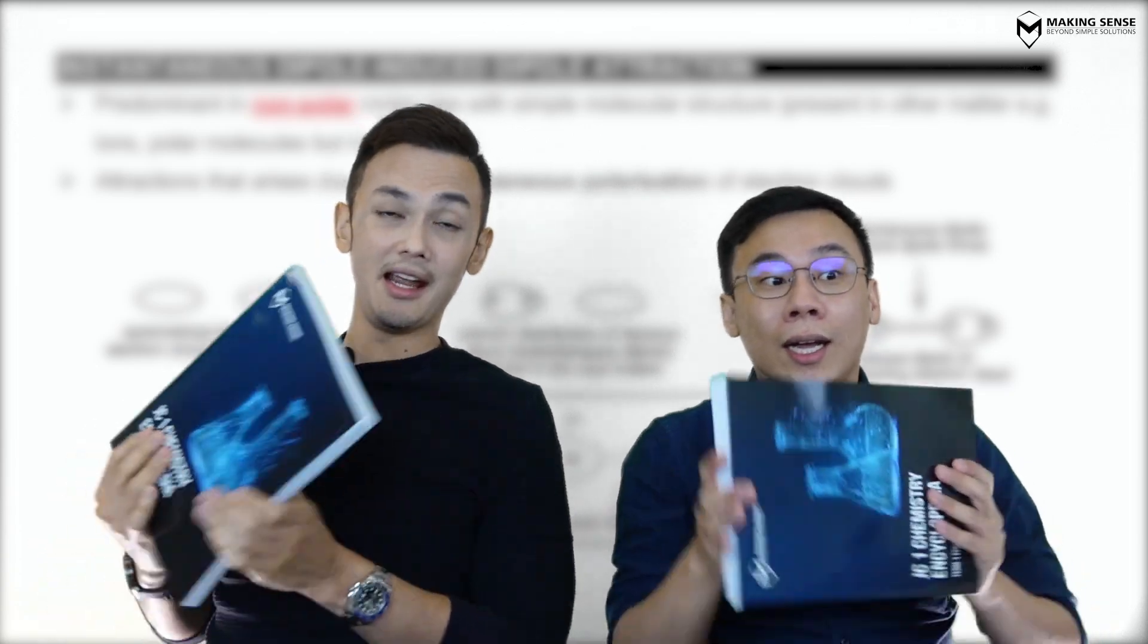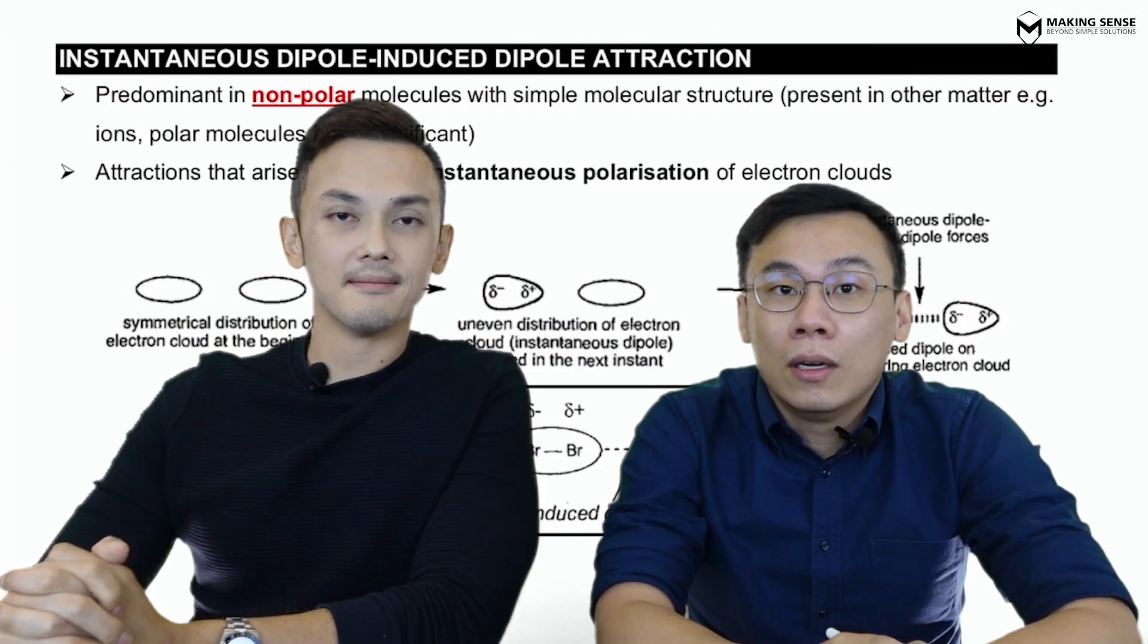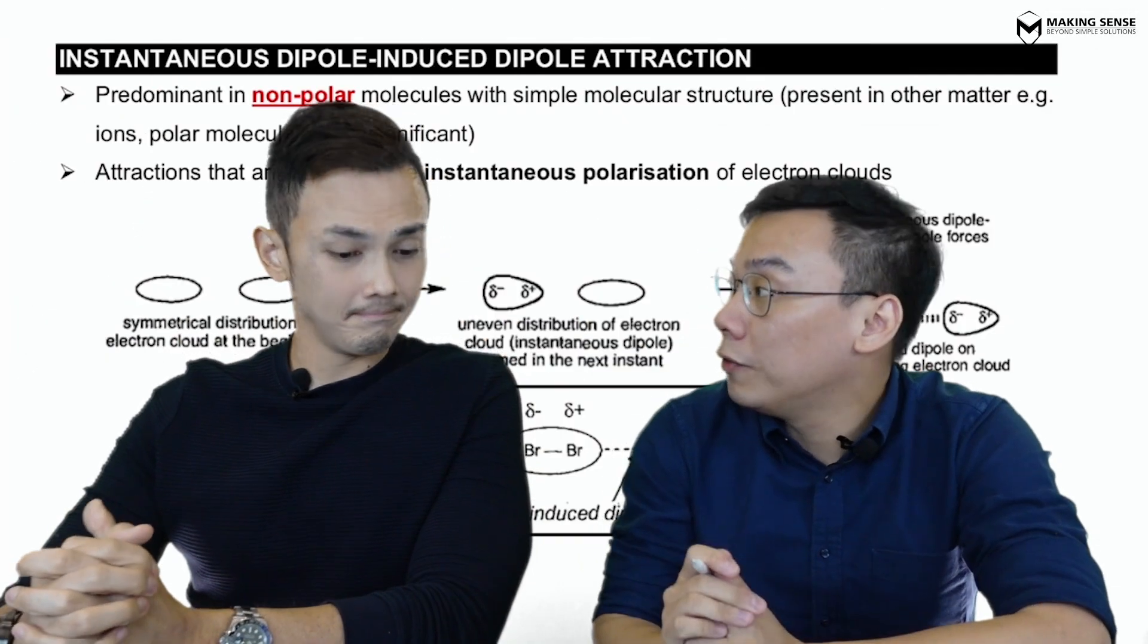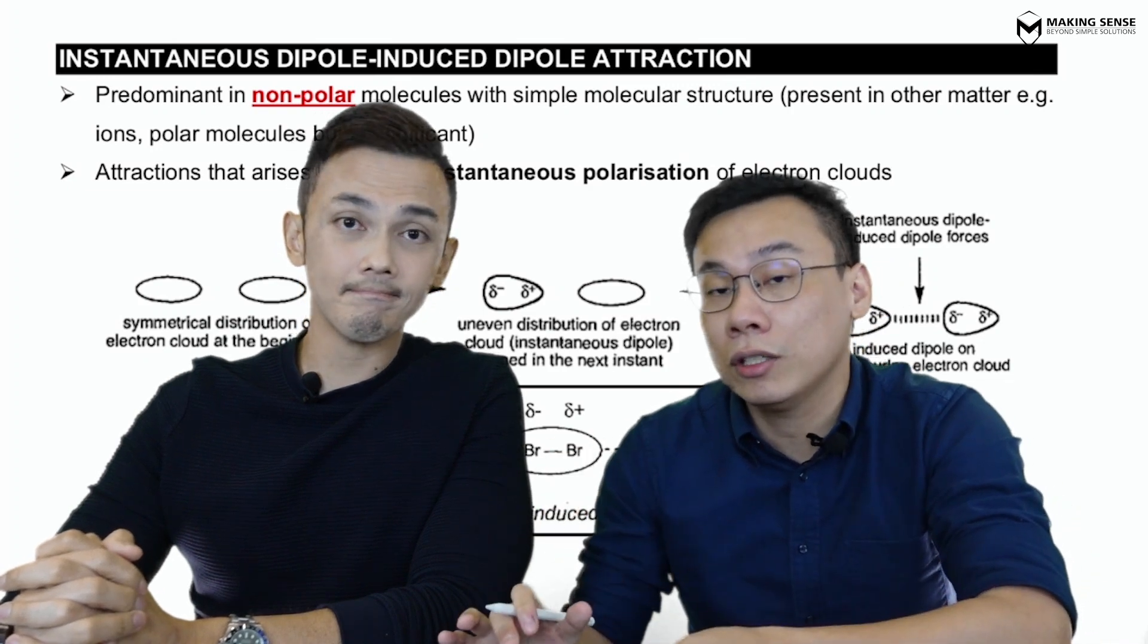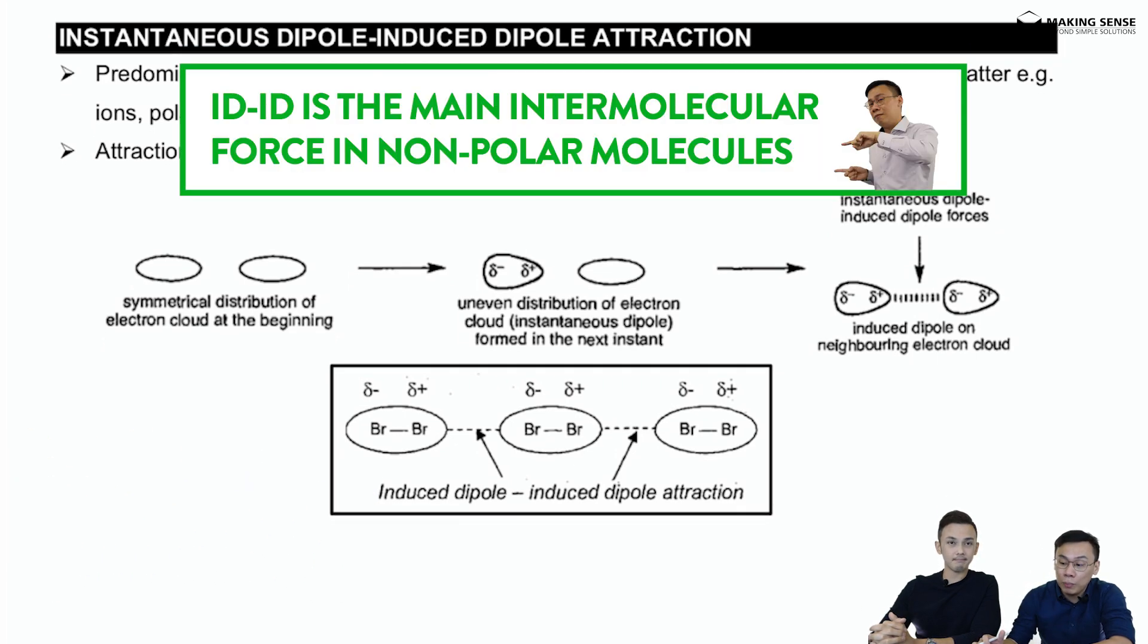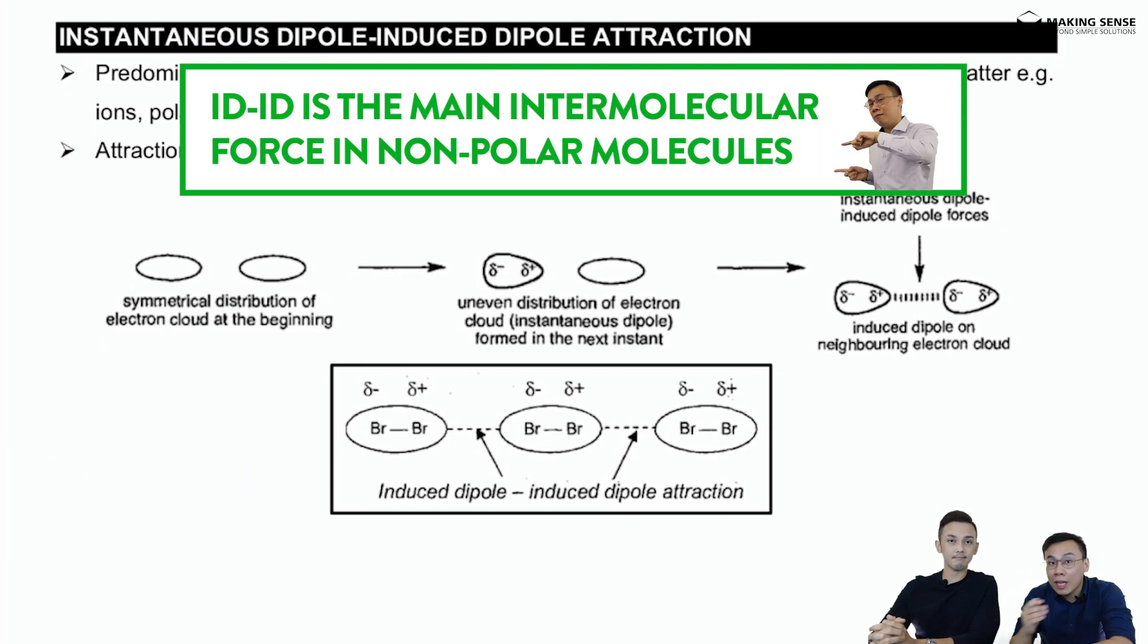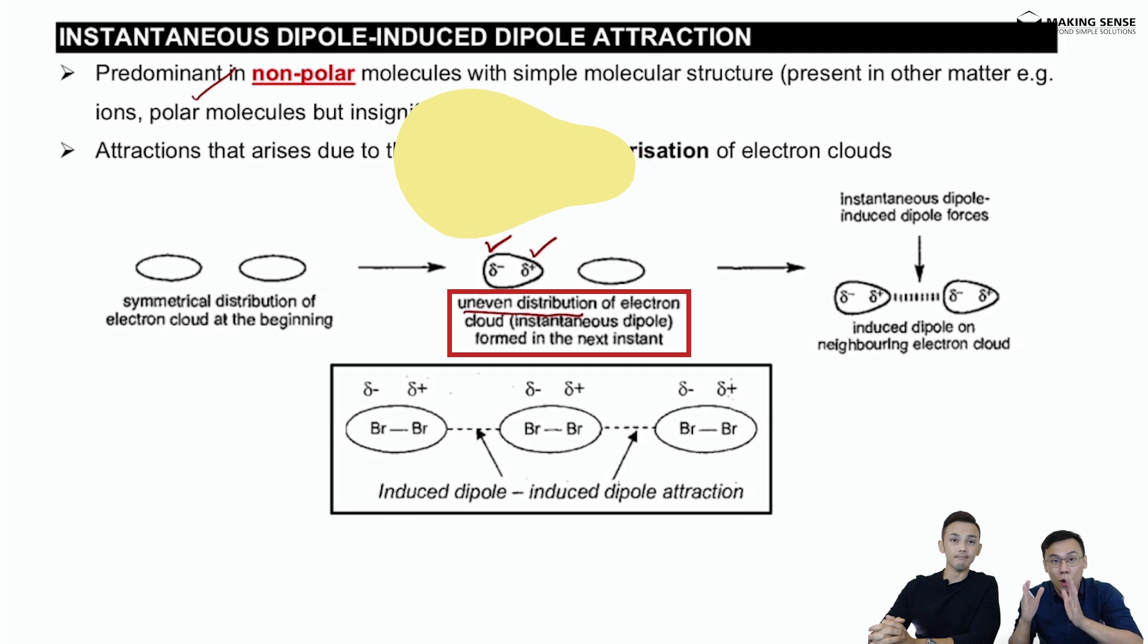William, to do a recap, what do we need? We need the encyclopedia. Get it ready. Let's start off with the first interaction: instantaneous dipole-induced dipole interactions, or ID-ID interactions. Please recall that this is the predominant force in non-polar molecules. How does this force arise? Simply put, at a particular point in time, because electrons are moving, there might be an uneven distribution of electron cloud creating a particular dipole in a molecule.